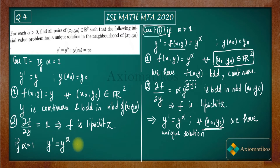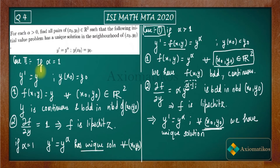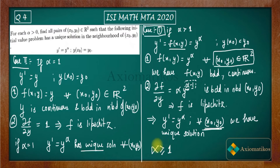So if alpha equals one, y' = y^α has a unique solution for every (x₀, y₀) ∈ ℝ². Up to now, from cases one and two, we have proved that if alpha is greater than or equal to one, you will get a unique solution. Now we have to check the case when 0 < alpha < 1.